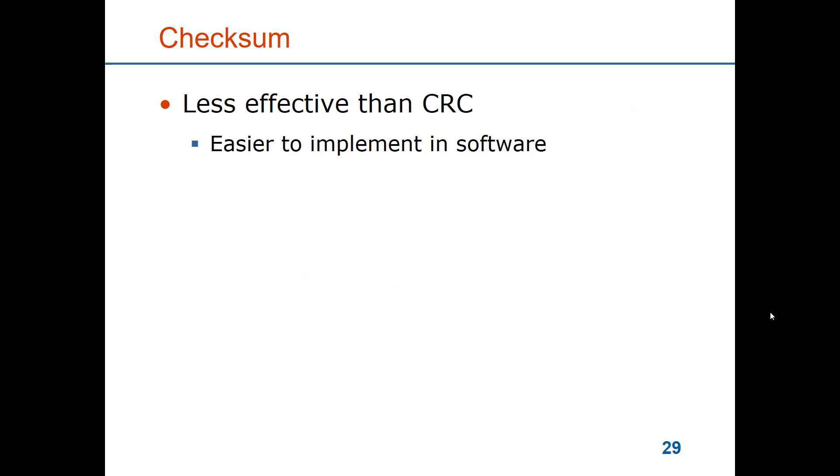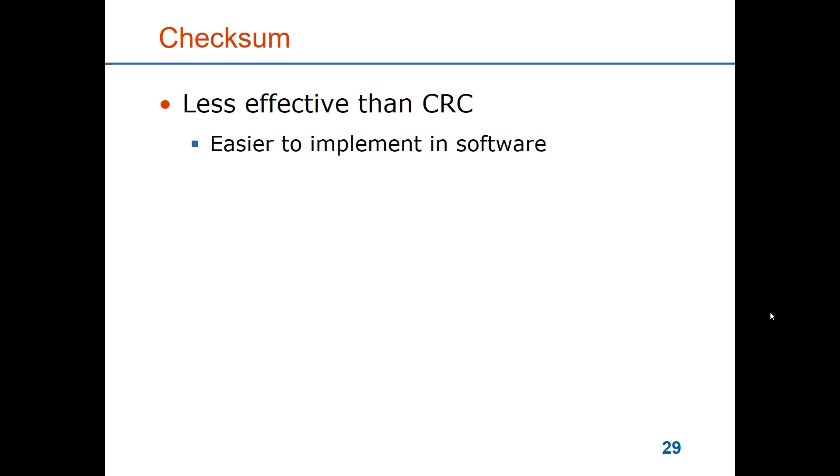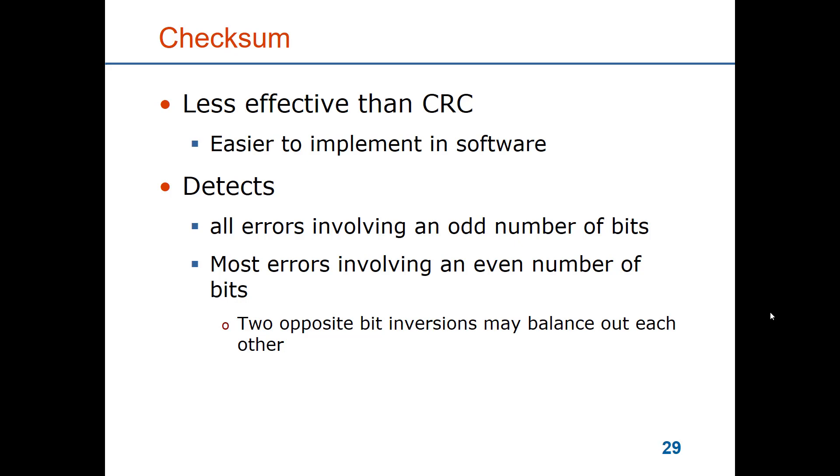Checksums are less effective than CRCs, but they are easy to implement in software. This was important in the birth of computer networks when computers were slow. It is not important today. But at that time they standardized checksums rather than CRCs for several protocols like the internet protocol and transmission control protocol. So it has certain detection capabilities but they are not very powerful. And therefore if you would build a modern protocol or communication system you would base that on a CRC.